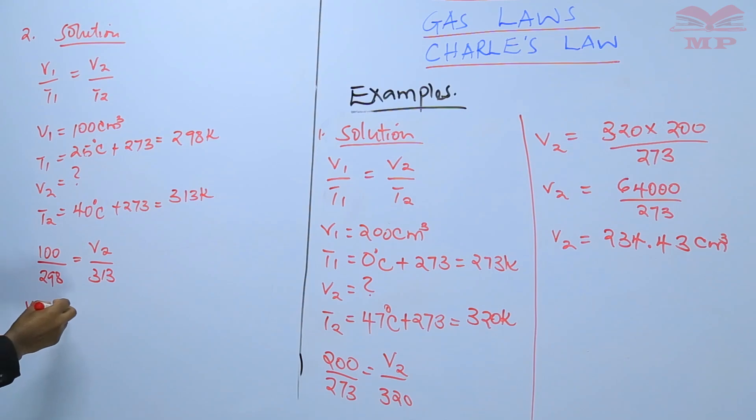Therefore, V2 will be given by 100 multiplied by 313 divided by 298.